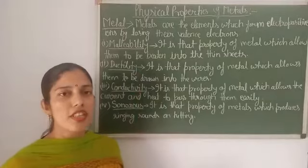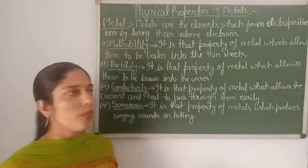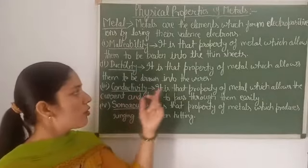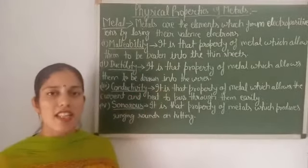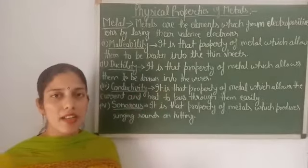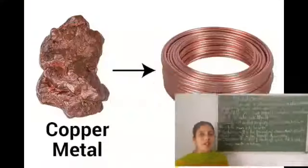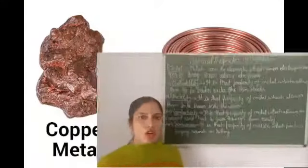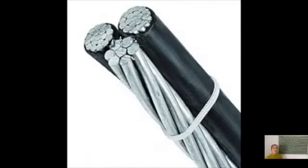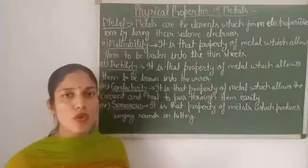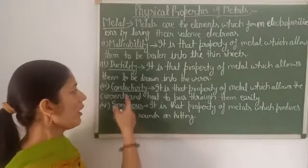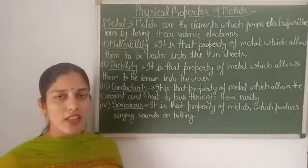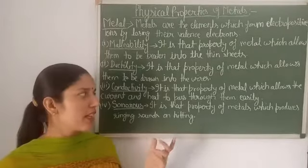The second property is ductility. It is that property of metals which allows them to be drawn into thin wires. Wires are made with metals — copper is a very ductile metal, and aluminium is also a good ductile metal. Both these metals are used to make wires.